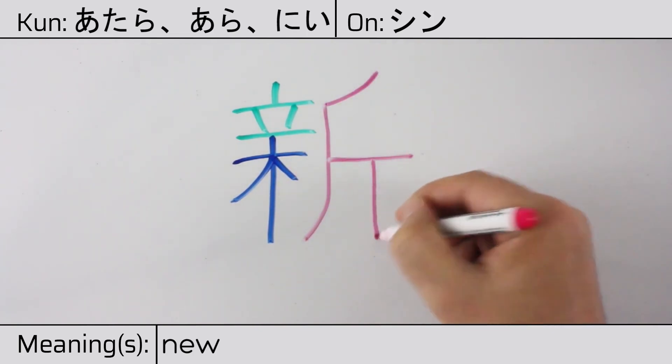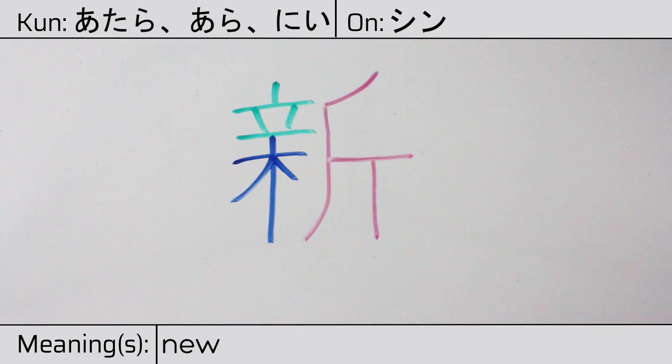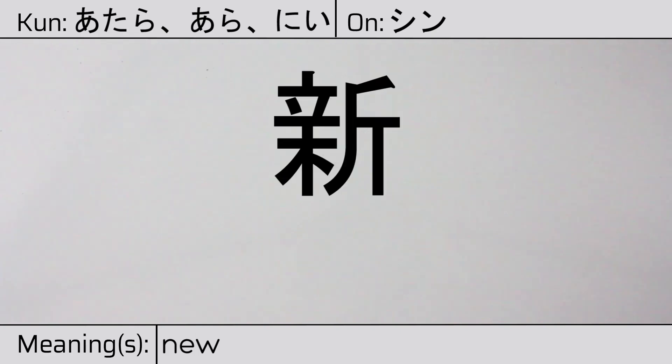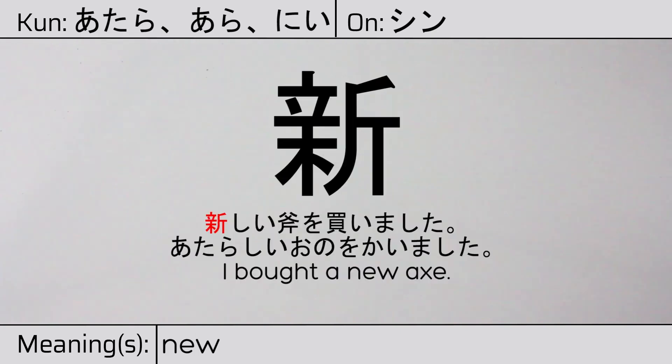You can remember this kanji by the following hint: a part of the forest cut down with an X, to make room for new growth. Our example sentence is: Atarashii ono wo kaimashita — I bought a new axe.